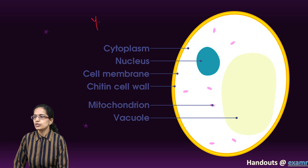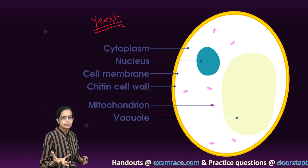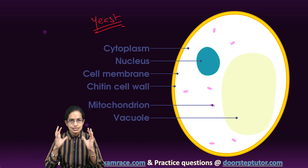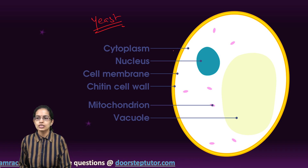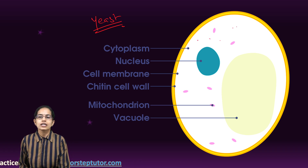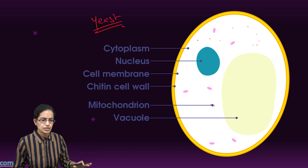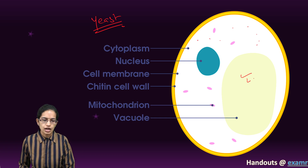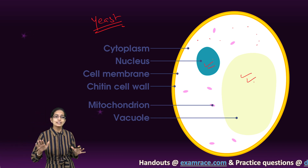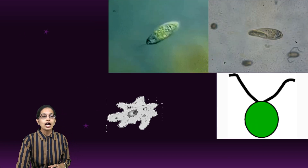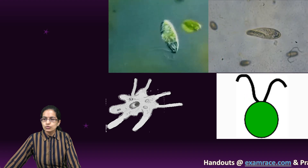Besides that, we also talk about yeast. Yeast has a spherical or oval shape with a distinct cell pattern and granular cytoplasm — the cytoplasm is granular in nature, not regular cytoplasm. The vacuole is very large and a nucleus is present. Those are the five unicellular organisms and their basic features.